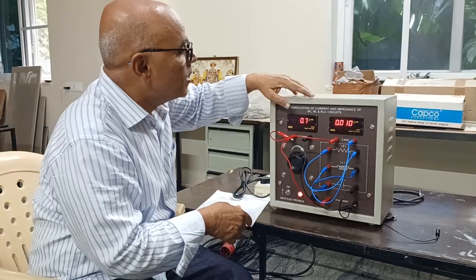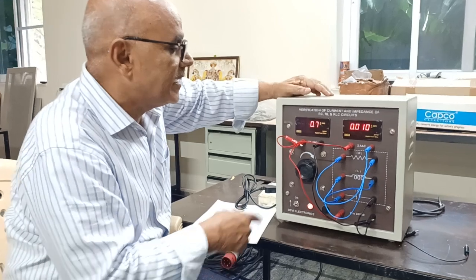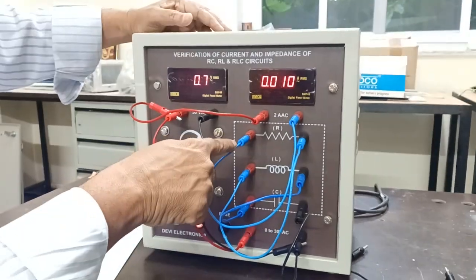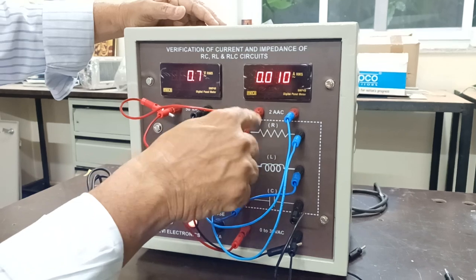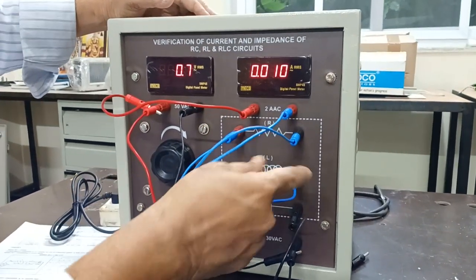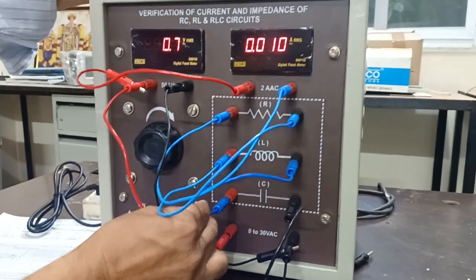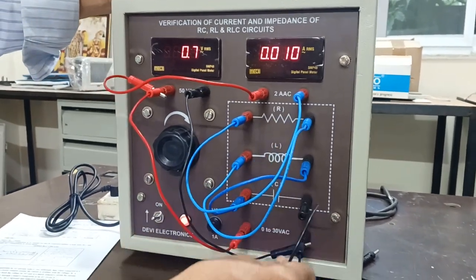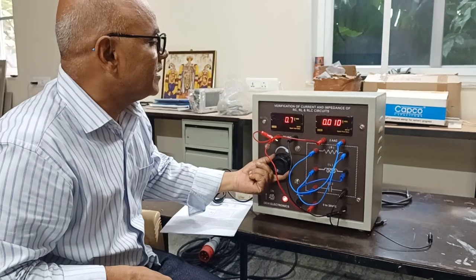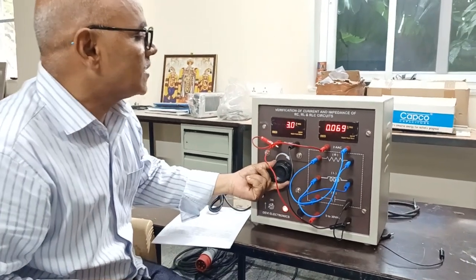Now we are going to perform RLC combination. In the earlier case, we did RL, second case RC. And now we are going to perform RLC. R1 and R another end to L starting point. L other end to C starting point. C other end to neutral. Now again, I am going to apply 30 volts across RLC component.